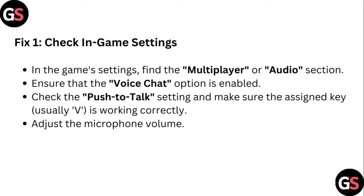Step 1: Check in-game settings. In the game settings, find the multiplayer or audio section. Ensure that the voice chat option is enabled. Check the push-to-talk settings and make sure the assigned key, usually B, is working correctly. Adjust the microphone volume.